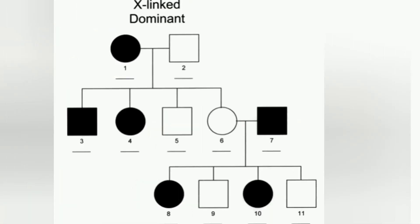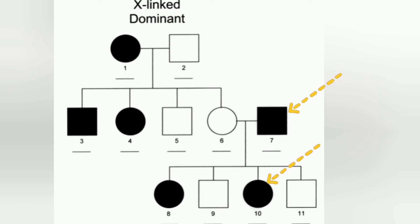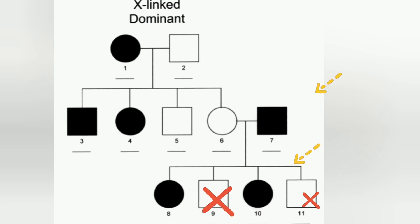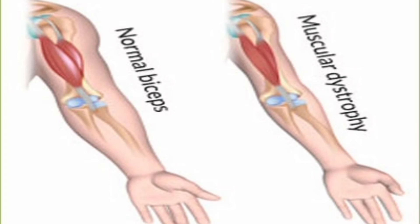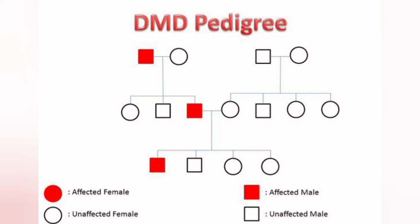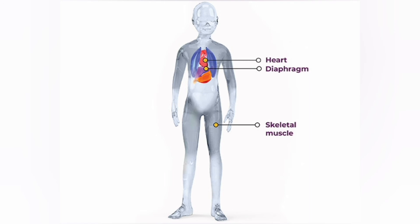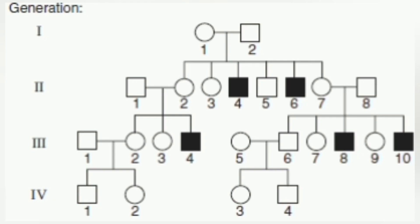X-linked dominant traits have encoding genes present on the X chromosome, with the mutant allele being dominant over the wild type allele. Such traits are very rare in a population. The trait appears in almost all generations and the inheritance is vertical. If the female is affected, about half of her sons are affected. If the father is affected, half of his daughters would be affected but none of his sons. An example of this type of X-linked disorder is Duchenne muscular dystrophy, the pedigree analysis of which is shown here.